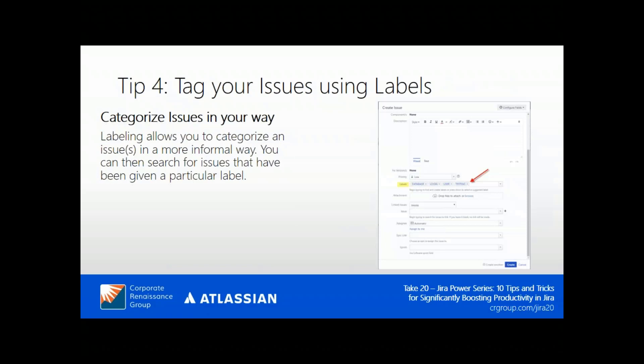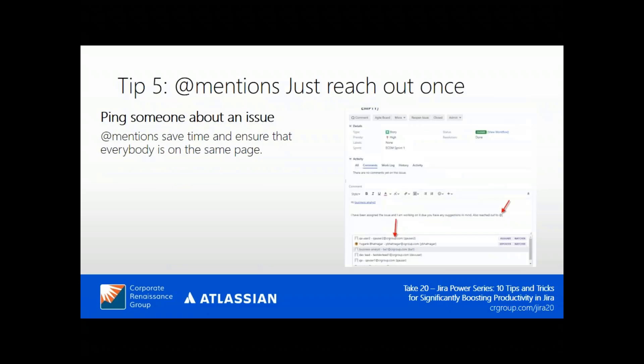Tip four: tag your issues using labels. It's an informal way to categorize your work. Whether you are creating a new issue or editing an existing one, you can define labels in the form. These labels can then be pulled into your searches.